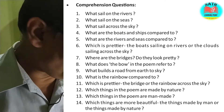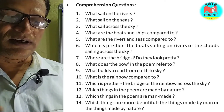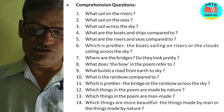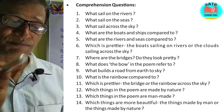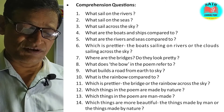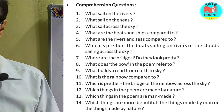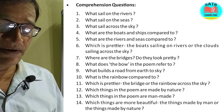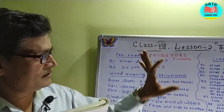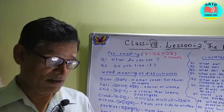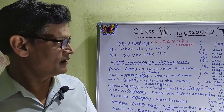Question number 12: Which things in the poem are made by nature? The road and bridges are manmade things in the poem. Which things are more beautiful — the things made by man or the things made by nature? The things made by nature are more beautiful than the things made by men. This is all about the rainbow. Next class we will discuss the other vocabulary questions about this subject.